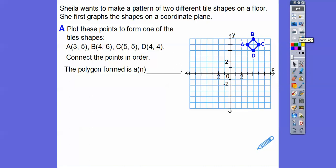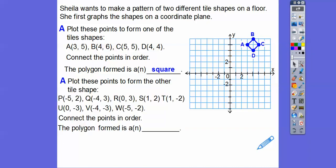What's that polygon form? Well, it looks like a triangle. No, it's a square. It looks like a square. So let's plot these points and see what kind of figure this guy makes.